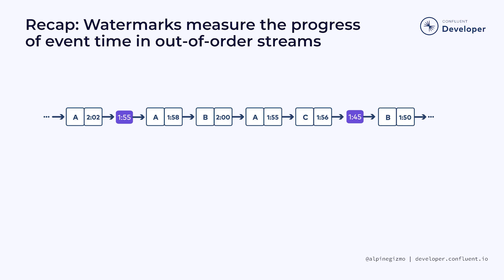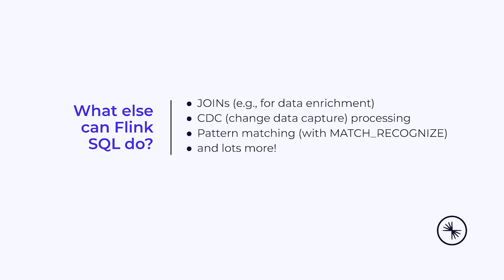We also talked about the role of watermarks, which is to enable time-based operations, like windowing, to produce their results when the time is right. Otherwise, when a stream is out of order, it can be difficult to know how long to wait for events that may, or may not, still arrive.